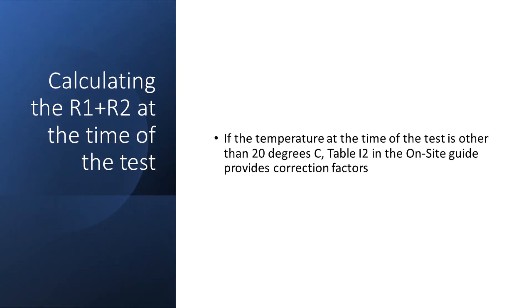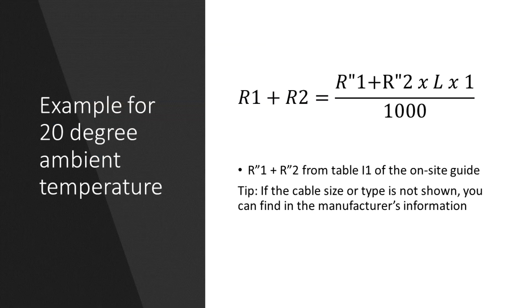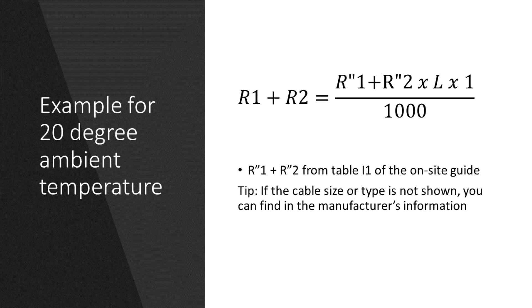So to calculate what the R1 plus R2 will be at the time of the test, we can use the correction factors on the next page in the on-site guide on table I2 which gives correction factors for various ambient temperatures. However, if the ambient temperature is 20 degrees C then the factor is 1, because the values for milli-ohms per meter are based on 20 degrees C.